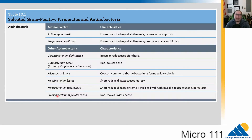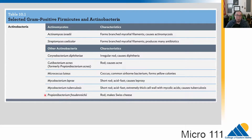We also have some actinobacteria: Streptomyces, one of the many important sources of our antibiotics; Corynebacterium diphtheriae; Micrococcus luteus, which we've used in the lab — it forms those yellow colonies we've seen; Mycobacterium leprae, which causes leprosy; and Mycobacterium tuberculosis, which causes tuberculosis. And if you like Swiss cheese, Propionibacterium freudenreichii is used in making it — it gives that tangy flavor and also causes the bubbles, so if you like Swiss cheese, you can thank that bacterium.